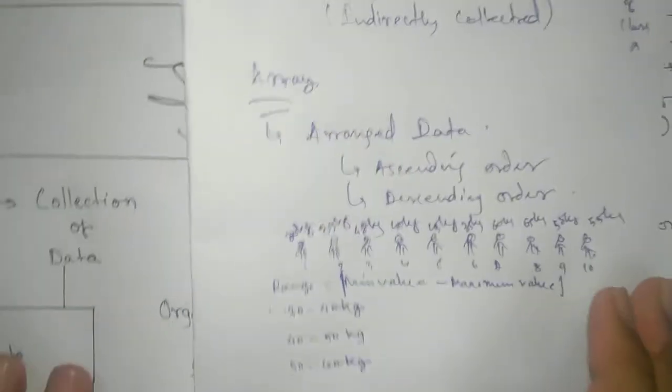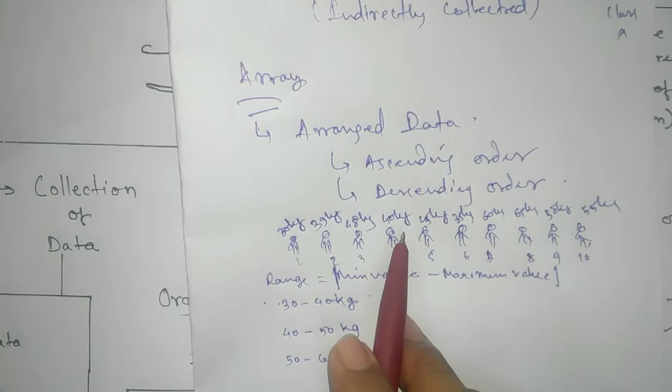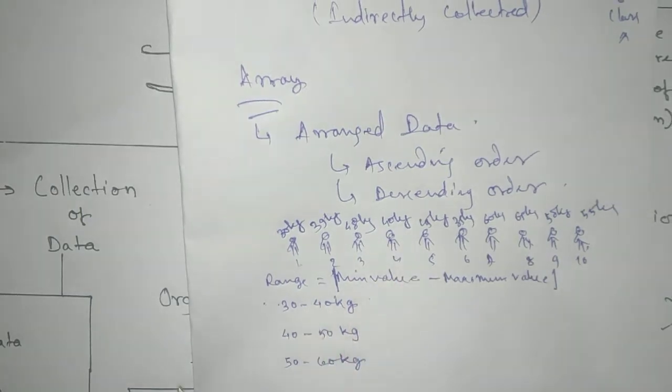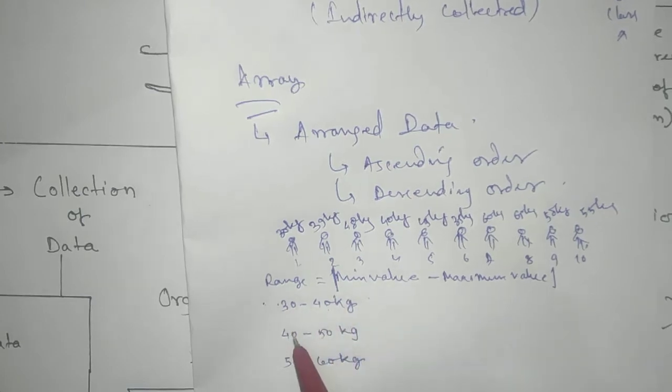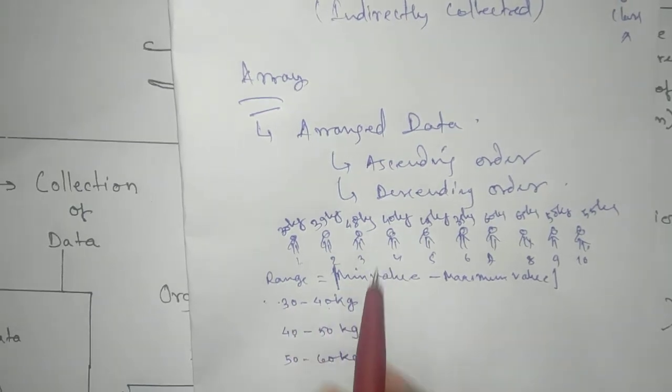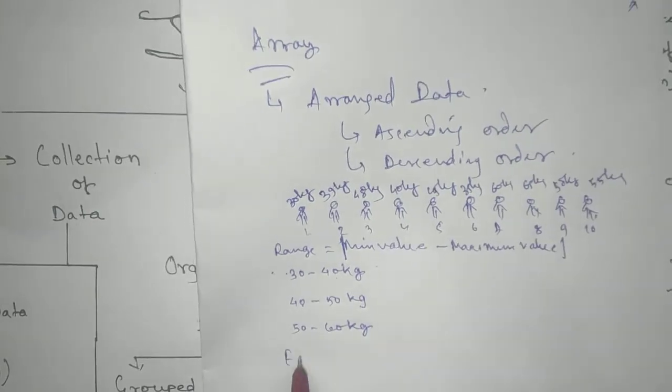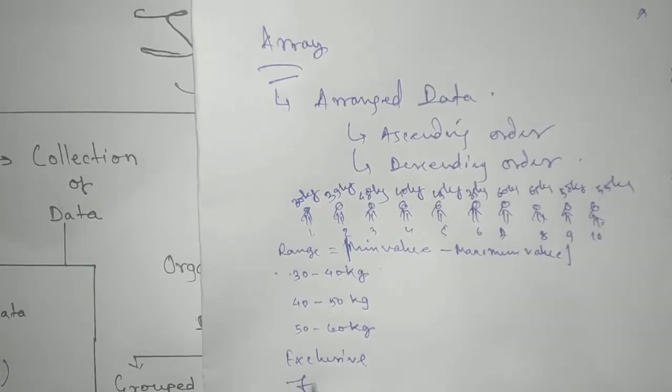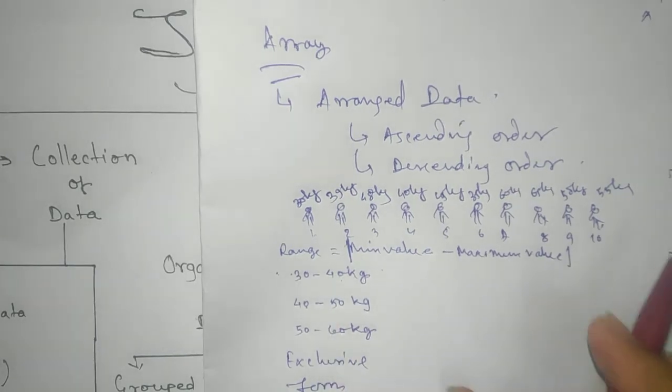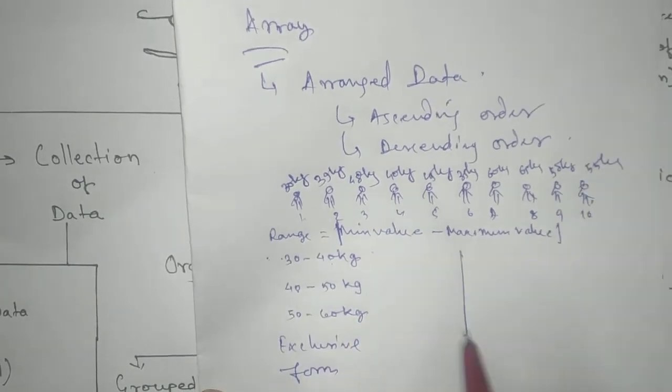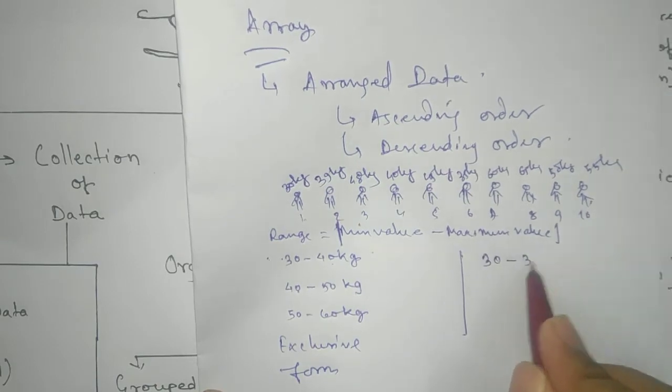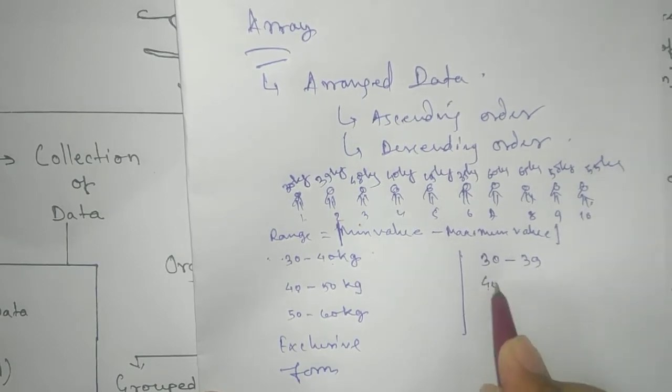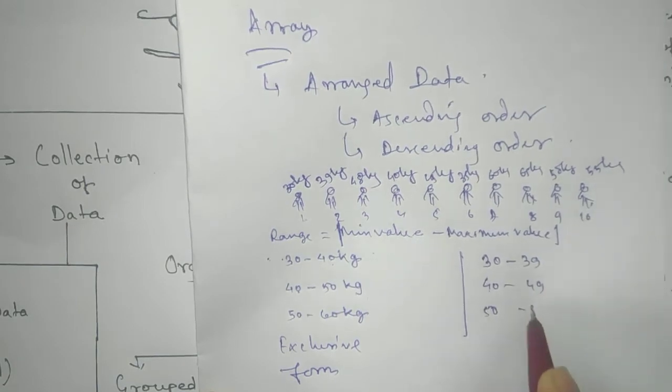So here you can see that 30 to 40 kg person, how many are there. And remember your 40 will not repeat. So here in group we can keep the person in a which form? Exclusive form. This is called exclusive. It will keep the person in this order like 32, 39, 42, 49, 52, 59.